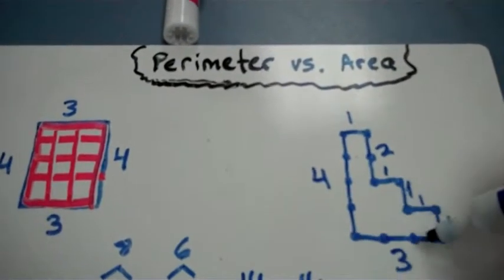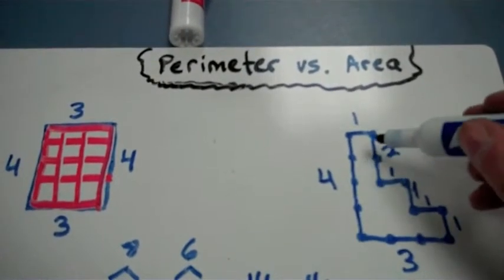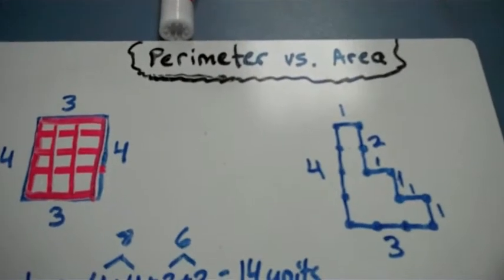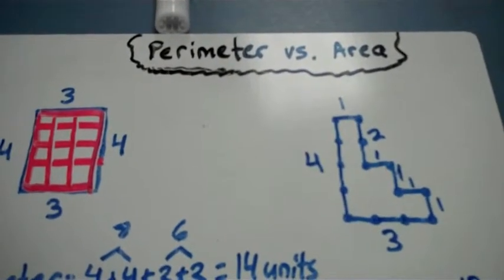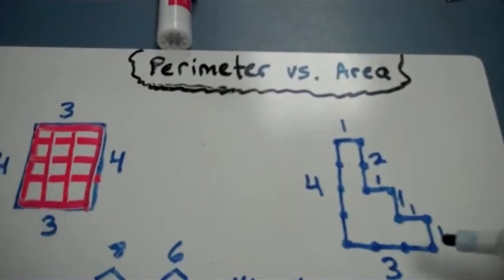Counting all the way around: 4, 5, 6, 7, 8, 9, 10, 11, 12, 13 units. The perimeter of this shape, or figure, is 13 units.